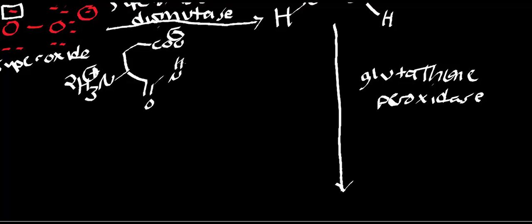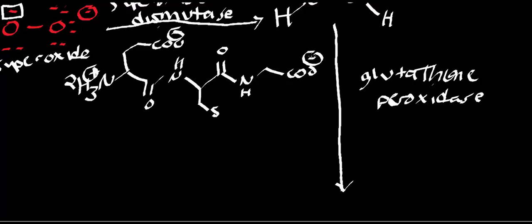Glutathione is a tripeptide, but it's a tripeptide that's not synthesized by a ribosome. It's actually synthesized by two enzymes: glutamate cystinyltransferase and glutathione synthase. Here is a monomer of glutathione. Notice what it is — it's a trimer starting at the N-terminus: glutamate, cysteine, and glycine.